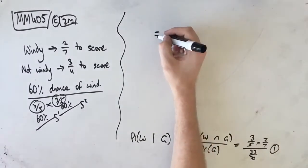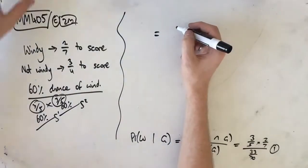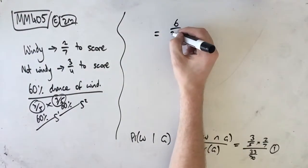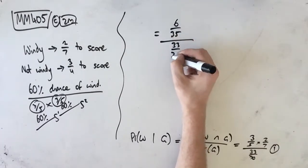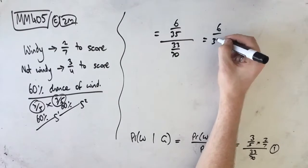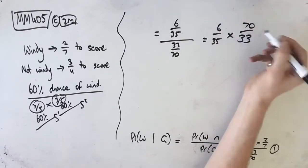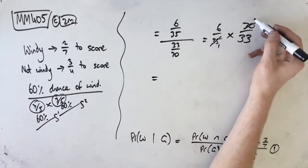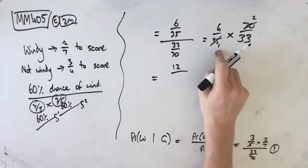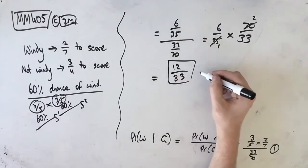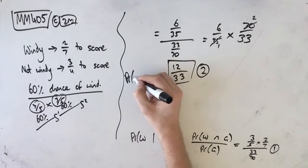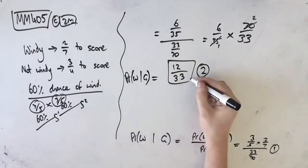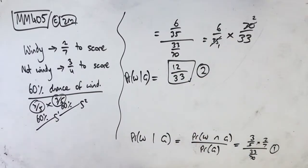Evaluating all this: 3 in 5 times 2 in 7 is 6 on 35, and we're dividing by 33 on 70, which is the same as 6 on 35 times 70 on 33. The 35 and 70 cancel to 1 and 2, so 6 times 2 is 12, and 1 times 33 is 33. So our final answer is 12 on 33 — that's the probability of it being windy given that he scored. That wraps up MM405. If you have any questions, hit me up in the comments below. Thank you for watching, and I'll see you in the next video.